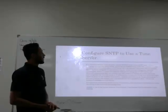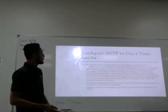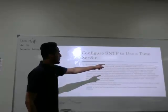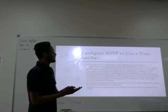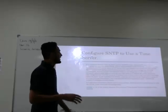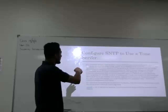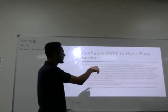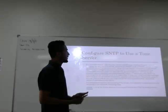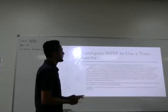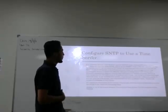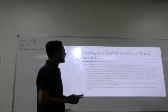Configure SMTP to use a time server. At a command prompt, type: net time /setsntp: NTP_server_name, where NTP_server_name is the NTP server name. For the NTP server list, specify an internet time server.